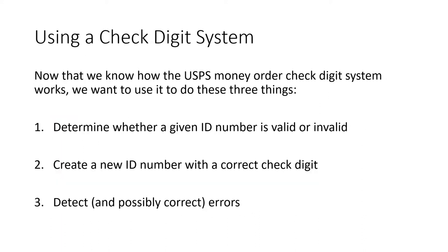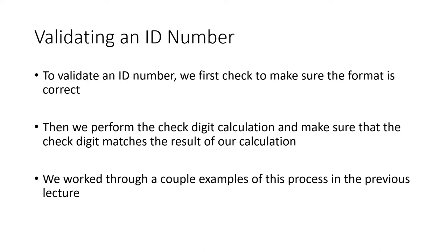So there are really three things that we want to be able to do with a check digit system. We want to determine whether a given ID number is valid or invalid. We want to be able to create a new ID number that has a correct check digit. And we also want to be able to detect and even maybe correct errors that might occur. The first one on that list was actually validating an ID number — checking to see if a given ID number is valid or invalid. So we check to make sure that the format is correct, and then we perform whatever calculation we're supposed to do and make sure that the result matches what it's supposed to be. We worked through a couple of examples of that in the previous lecture, so go back and watch it again if you want a refresher.